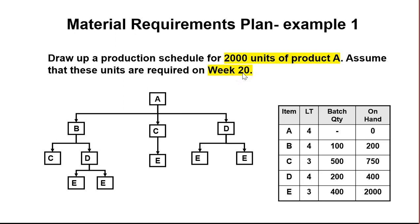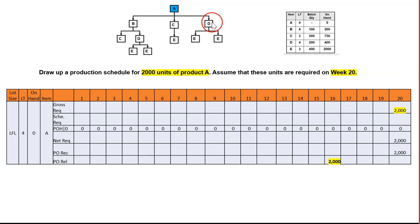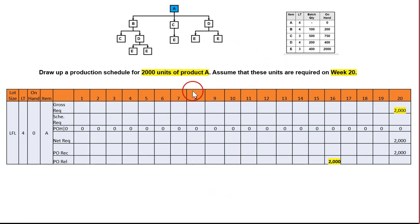So we need to do the MRP. How many MRPs do we need? We need MRP for A, B, C, D, and E — so there are going to be five MRPs, one for each item.